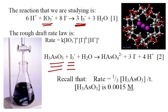So the rate of our reaction is one-third the concentration of arsenious acid, which is 0.0015 divided by T.